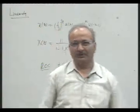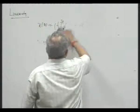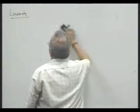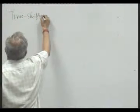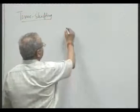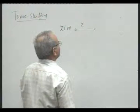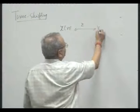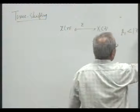Now, another property which is called the shift property. This is the time shift. X(z) is the z-transform of x[l], and the ROC is mod z greater than r1 and less than r2.